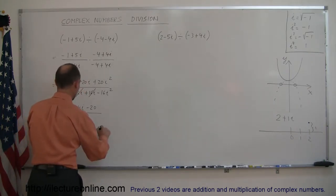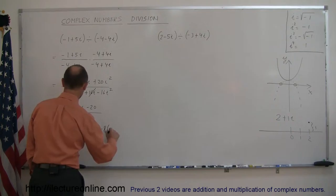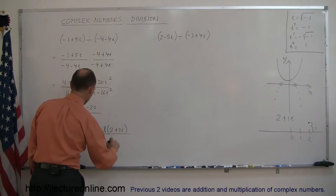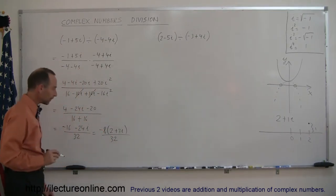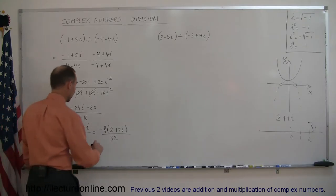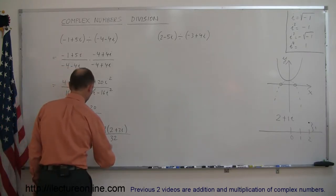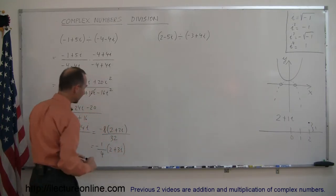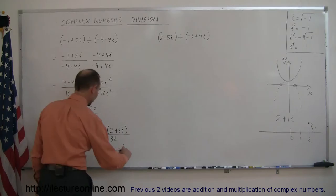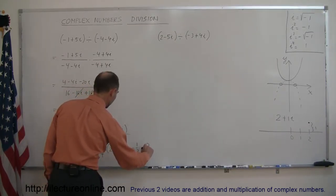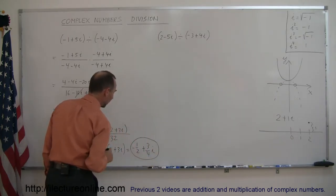Let's factor out the biggest number we can — minus 8. So minus 8 times 2 plus 3i, and the denominator is 32. You can see that 8 divided by 32 is really one fourth, so this equals minus one fourth times 2 plus 3i. Multiplying that in, we get minus 2 over 4, which is negative one half, plus 3 over 4 i. That's the best way to write the final answer.